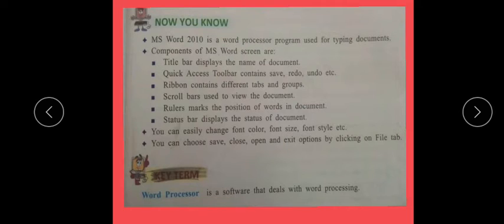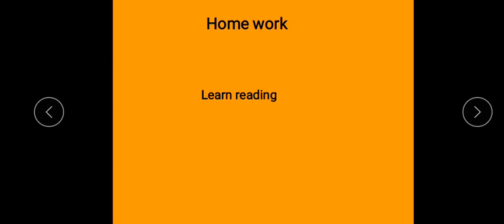In the 'Now You Know' section, you have the definition of MS Word and its components described, including the title bar, Quick Access Toolbar, ribbon, scroll bar, ruler, and status bar. You need to read this section on your own. When short question answers come, you can easily solve them. Also read the key term 'word processing' on your own.